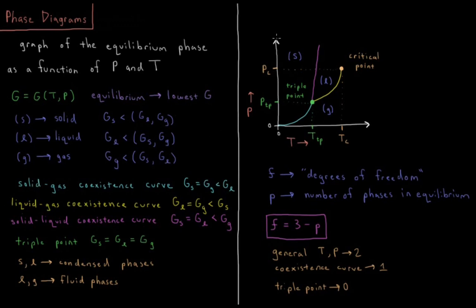Some features of our phase diagram: along the x-axis is the temperature, and along the y-axis is the pressure. We see a region usually on the left where we have the solid being the equilibrium phase. There's a region usually in the lower right where the gas is the equilibrium phase, and then somewhere between those two, starting at some finite temperature and pressure, is the liquid phase.